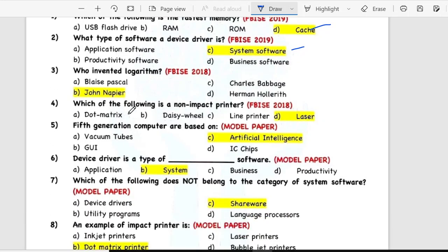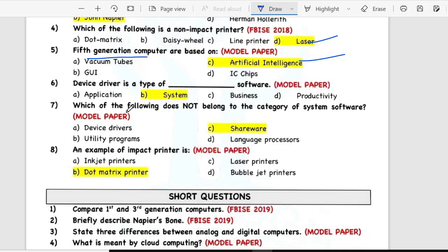Who invented logarithm? John Napier. Fourth one is which of the following is a non-impact printer? Laser. Fifth generation computers are based on artificial intelligence. Device driver is a type of system software.